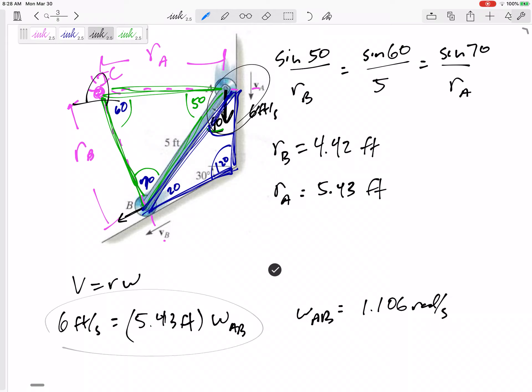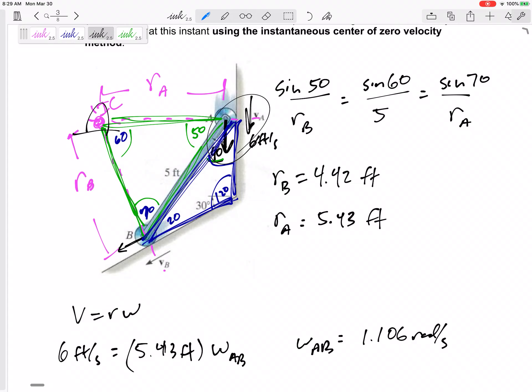Omega of bar AB is 1.106 radians per second. This equation will not tell me positive or negative. This equation will not tell me clockwise or counterclockwise. I've got to visualize it myself. A is going down, and it is centered about there, so it is going clockwise.